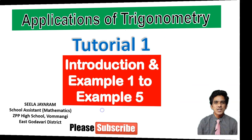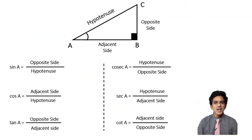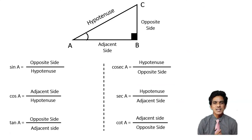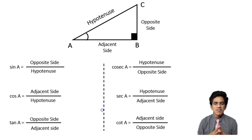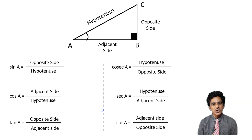In the previous tutorials, we have already learned that when you have a right angle triangle, there are 6 trigonometric ratios you can write for the remaining 2 angles: sin, cos, tan, cosecant, secant, and cosine. We have already learned how to calculate the values of these trigonometric ratios when the angle is 0, 30, 45, 60, and 90 degrees.